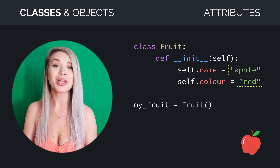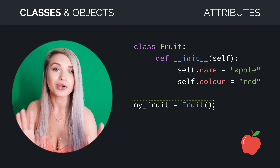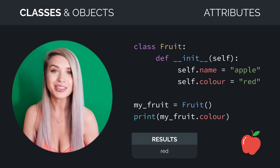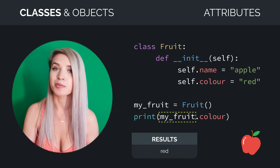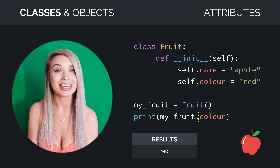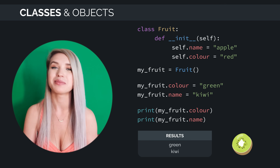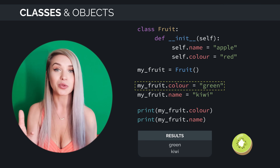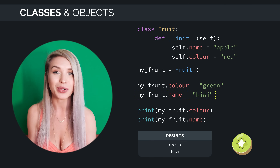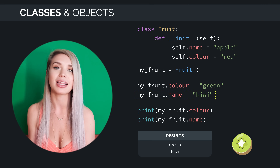Then we can call our fruit class and assign it to a variable name, just like we do with regular functions. We can easily access attribute values by typing the name of the object, my fruit, followed by the name of the attribute we would like to get. We can also easily adjust these attributes by typing my fruit dot color equals green, or my fruit dot name equals kiwi, and that way we are not restricted to the initial values we have selected.